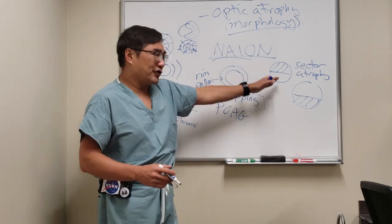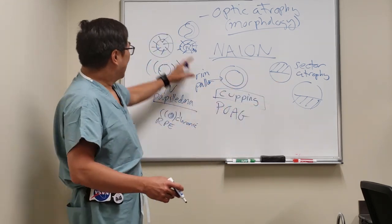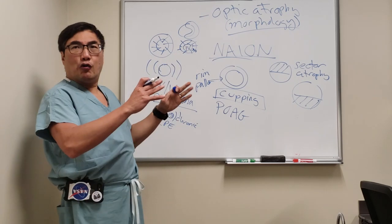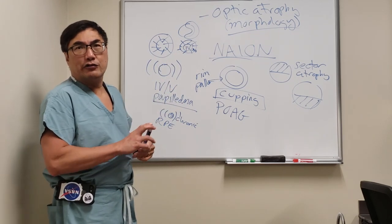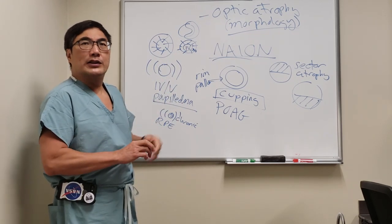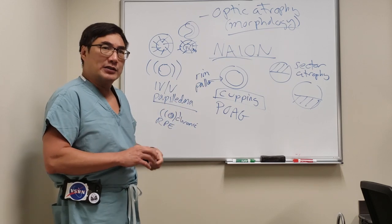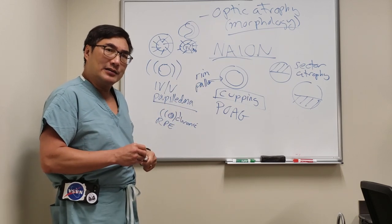You should look out for sector atrophy, cupping, and post-papilledema high watermark to try and determine the cause of the optic atrophy. But in general, you can't tell just by looking at a pale nerve.